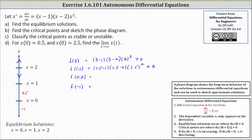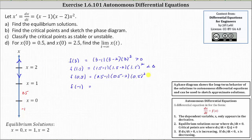Now let's determine the sign of f of 0.5. This equals the quantity 0.5 minus one times the quantity 0.5 minus two times the square of 0.5. Here we have a negative times a negative, which is a positive, times the square of a positive, which is positive or greater than zero. This indicates when x is between zero and one, as t approaches infinity, x of t is increasing, which we indicate using an up arrow.